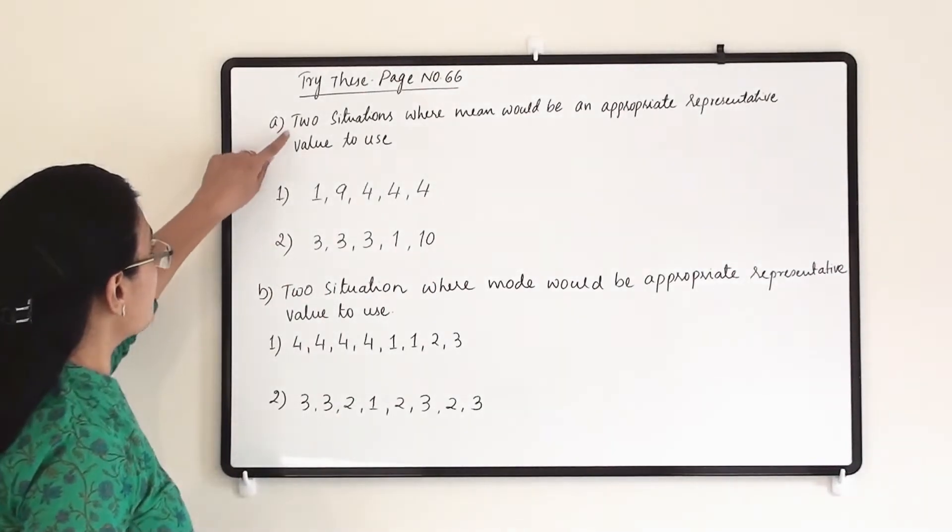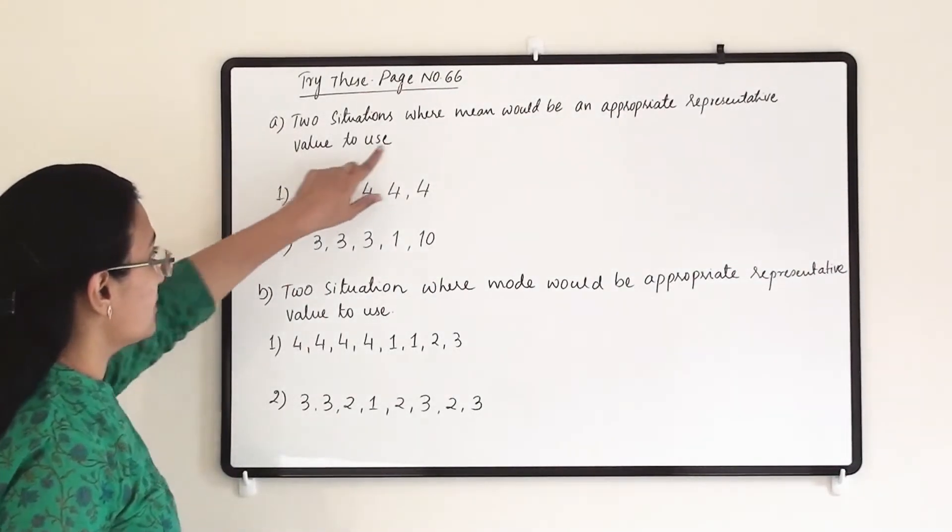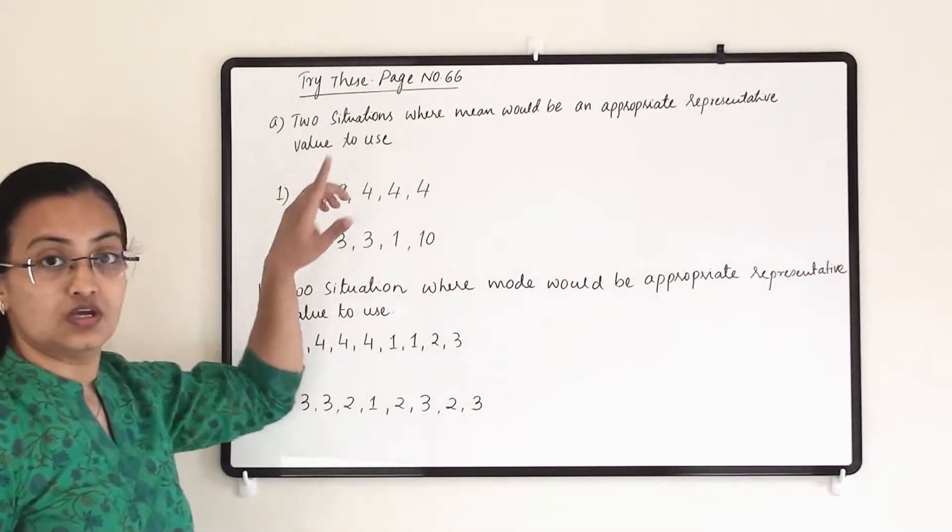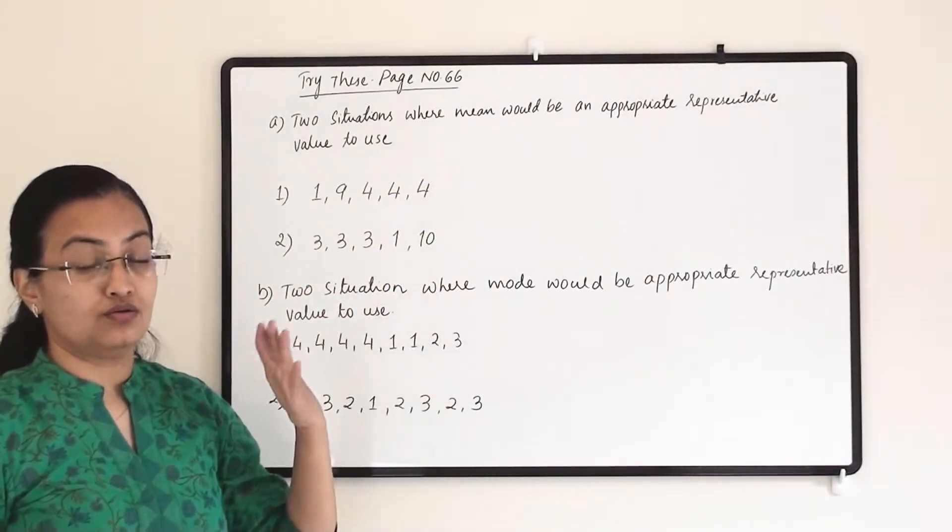So the question is, we have to give two situations where mean would be the appropriate representative value to use, not mode and not the median.